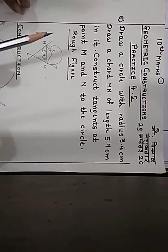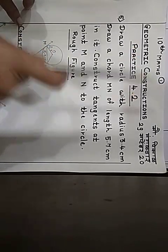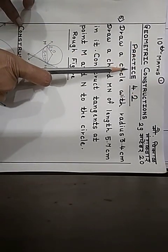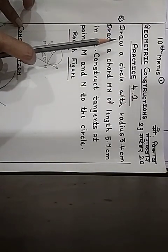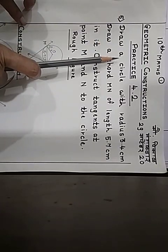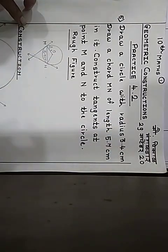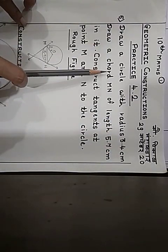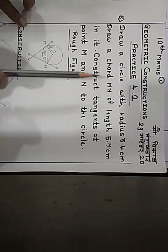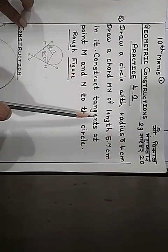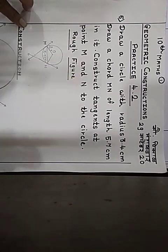Good morning. In the chapter geometric constructions, practice set 4.2, the question is: draw a circle with radius 3.4 cm, draw a chord MN of length 5.7 cm, and construct tangents at point M and N to the circle.